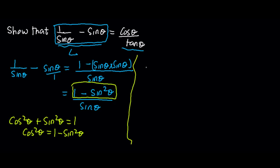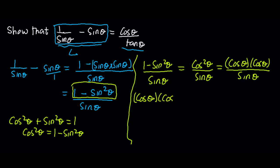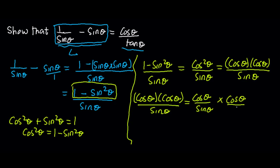So, what it means is that 1 minus sin squared theta, all on sin theta, is given by cos squared theta, all on sin theta. And this is the same as cos theta times another cos theta, all on sin theta.